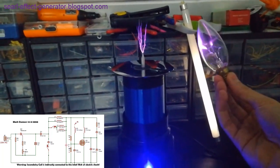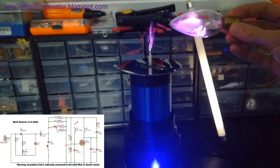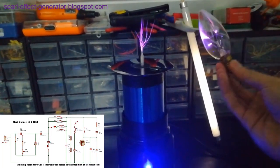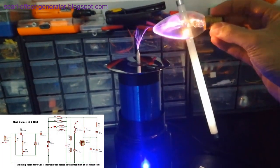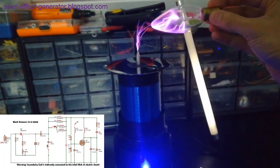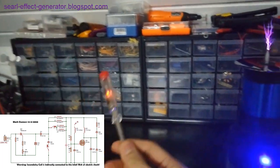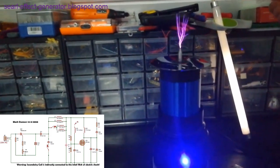Moreover, the Tesla coil has been the subject of exploration by ether field physics experts, particularly in their quest to harness free energy. Notably, Don Smith and the concepts of the Searle effect generator have played a role in this endeavor, seeking to unlock the untapped potential of the Tesla coil as a source of free energy.